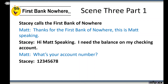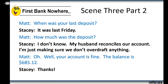Scene 3: Stacy calls the First Bank of Nowhere. Matt: Thank you for calling the First Bank of Nowhere, this is Matt speaking. Stacy: Hi, I need the balance on my checking account. Matt: Sure thing — can I get your account number please? Stacy: 1-2-3-4-5-6-7-8. Matt: Okay, could you tell me the date of your last deposit? Stacy: It was last Friday. Matt: Okay, and about how much was that deposit for? Stacy: I don't know, my husband reconciles our account — I'm just making sure we don't overdraft anything. Matt: Oh well, you don't have to worry about that — I think your account is fine. The balance right now is $685.12. Stacy: Okay, so the balance is $685.12? Matt: That is correct. Stacy: Awesome, thanks so much. Matt: No problem, have a nice day.